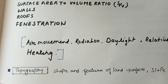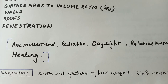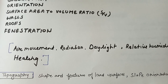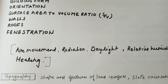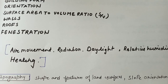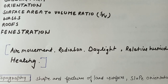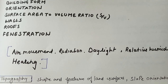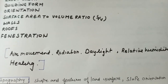The first point is topography. Topography is the shape and feature of the land surface, and we also study slope orientation under topography. We utilize the given slope of the site and see how the wind behaves — all things related to the land form and land surface.